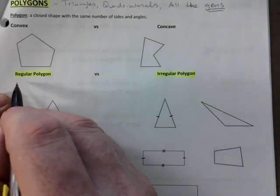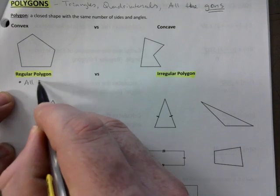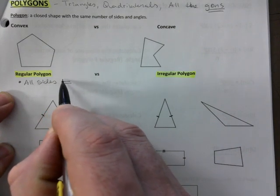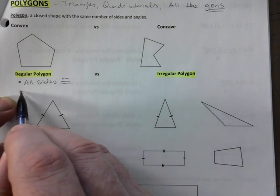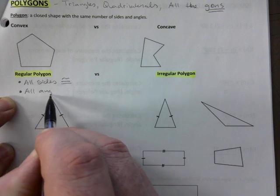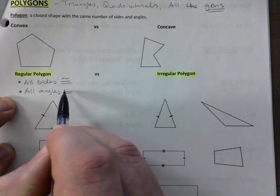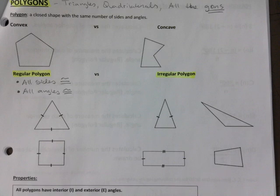And for something to be regular, we need all sides to be congruent. So all sides have to be the same in length. And the second condition is all angles have to be congruent as well. That is the prerequisite for something to be called regular, a regular polygon.